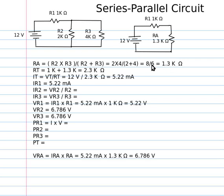So 8 divided by 6 gives me 1 and 1/3, or 1 and 2/6 kilo ohms. So I'll just call that 1.3 kilo ohms. So that's the resistance of RA, resistor A.